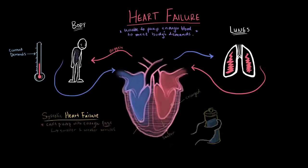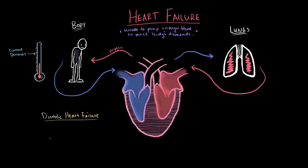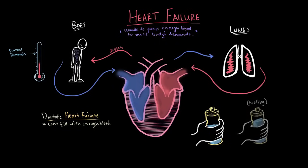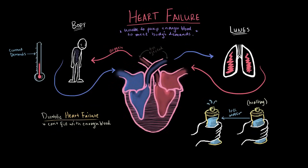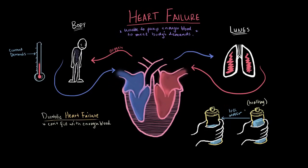The second type is diastolic heart failure. Instead of being a pumping problem with muscles that are too small, diastolic failure is a filling problem — which is why it refers to diastole, the phase where the heart fills with blood. Your body isn't receiving enough blood because the heart isn't filling with enough blood to pump out in the first place. Like the water bottle analogy, if the bottle is filled with less water, even squeezing with the same force will eject less water. The muscles are actually larger in this case, taking up more space and leaving less room for blood to fill into the ventricles.